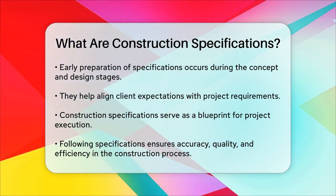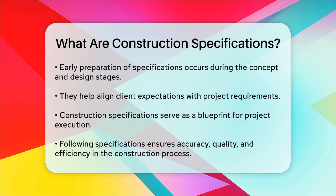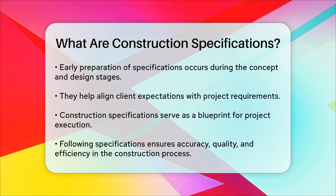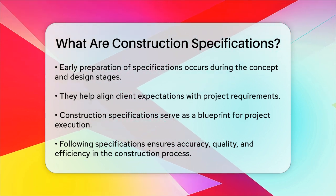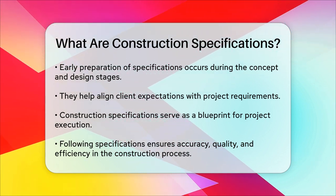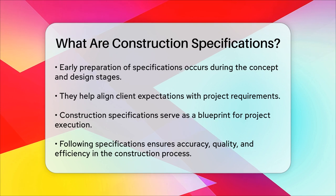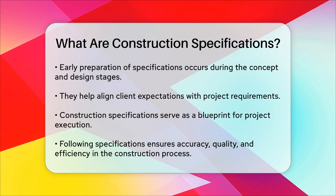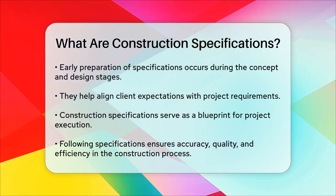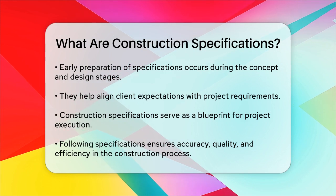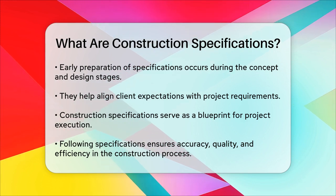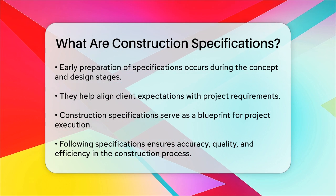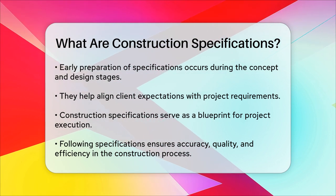In essence, construction specifications are the blueprint for how a project should be executed. They provide clear instructions, reference quality and safety standards, and define the materials and installation methods. By following these specs, contractors can ensure that the project is completed accurately and to the desired quality, making the entire construction process smoother and more efficient.